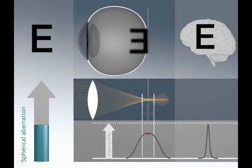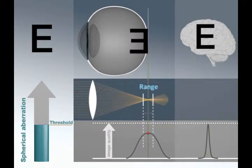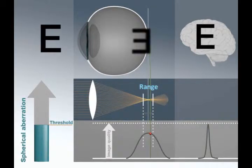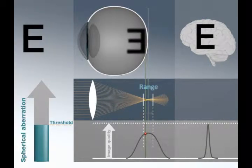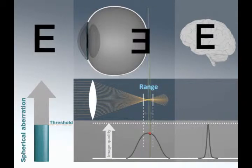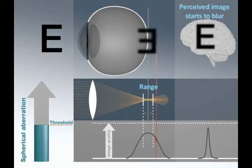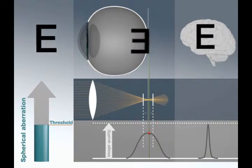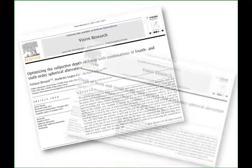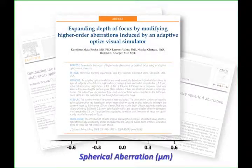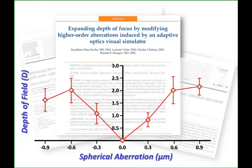The advantage of spherical aberration in the eye is that there is a range of focal distance points where the image will be equally blurred but still perceived by the mind as a sharp image. This range is the depth of field. Outside of this range, the perceived image becomes blurred. This visual system can be thought of as a dynamic neural pseudo-accommodating system. This increase in depth of field due to spherical aberration has been confirmed by various groups using adaptive optics.